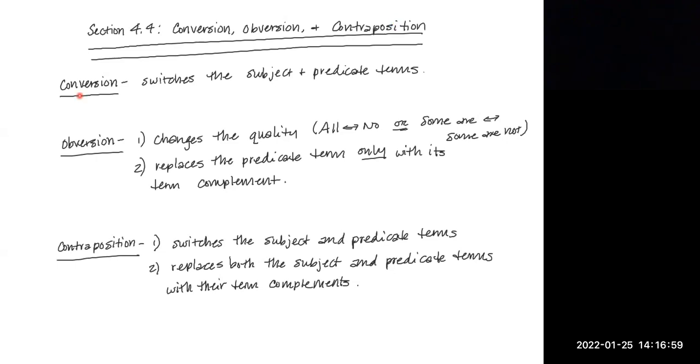So conversion will switch the subject and predicate terms. For example, if I had all S are P and I used conversion, I'm just going to use an arrow. That's not an official thing to do, I'm just showing you what I'm doing. You don't need to write the arrow. It switches the subject and predicate term, meaning it switches their places. So it becomes all P are S.